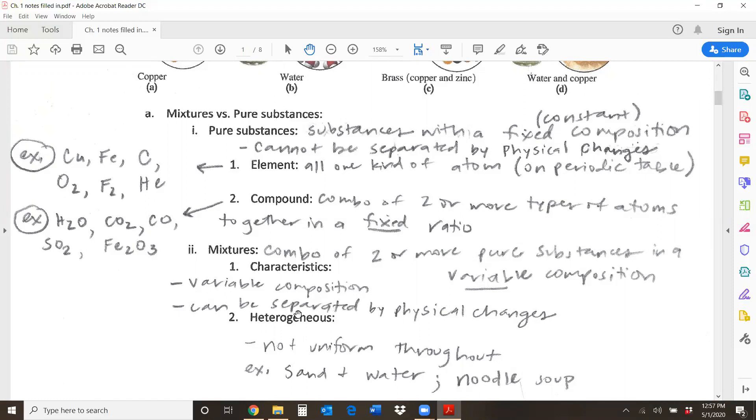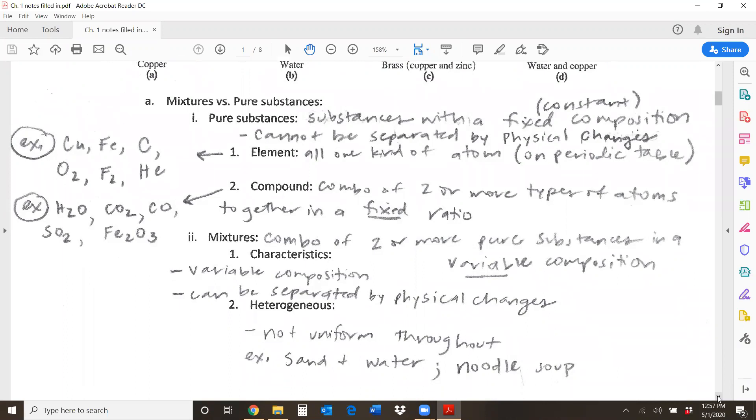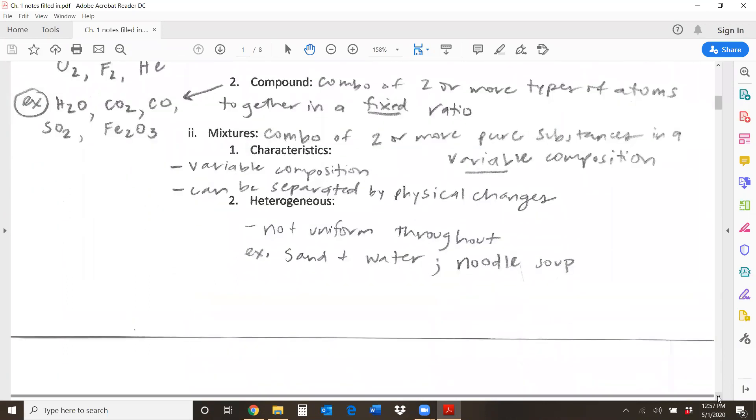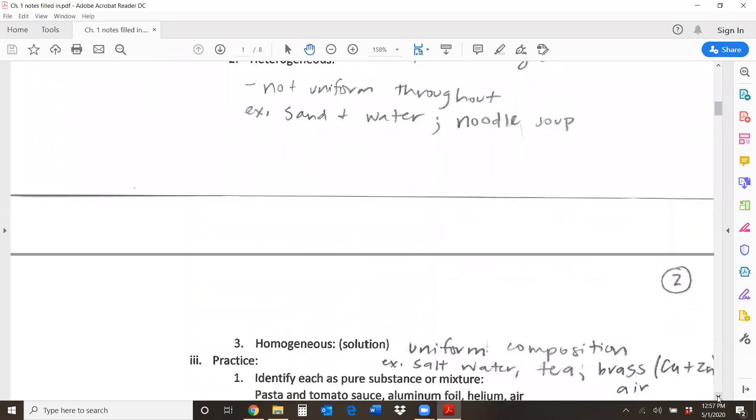If you're a heterogeneous mixture, that means you are not uniform throughout. So if you were to look at the beaker of your solution, it would not be the same from top to bottom. So sand and water, think about those two things. If you tried to mix them up, no matter what you did, the sand would always settle down at the bottom, and there would not be uniform composition there. So that would be a heterogeneous mixture. Noodle soup would be another example. Every bite is not going to be the same.